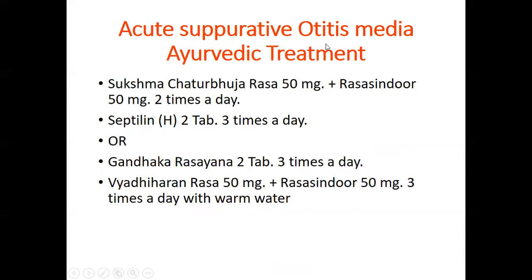Ayurvedic treatment for acute suppurative otitis media — first prescription: Sukshma Triphala Rasa 50 mg plus Rasa Sindur 50 mg, two times a day; Septilin (Himalaya) two tablets three times a day. Second prescription: Gandhaka Rasayana two tablets three times a day and Vyadhihara Rasa 50 mg plus Rasa Sindur 50 mg three times a day with warm water.